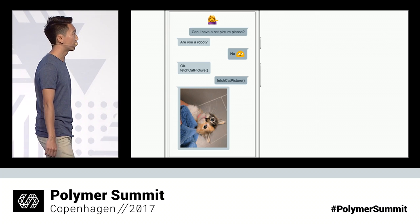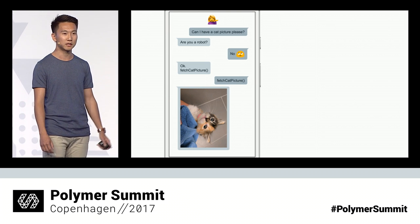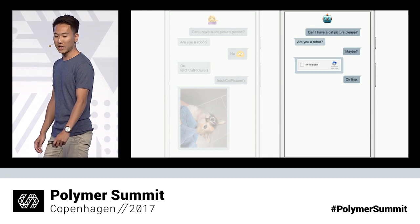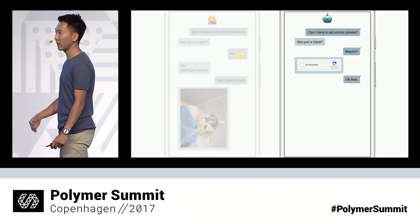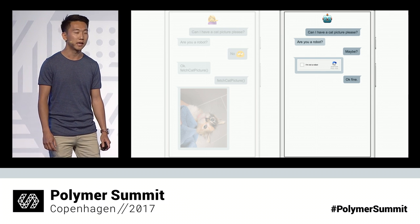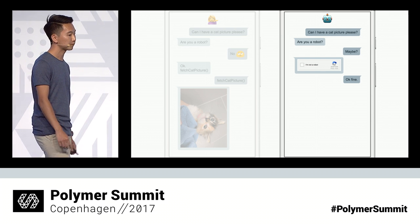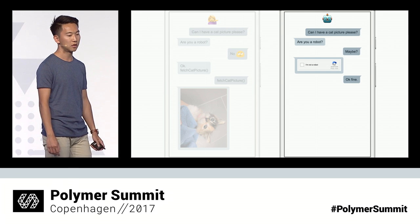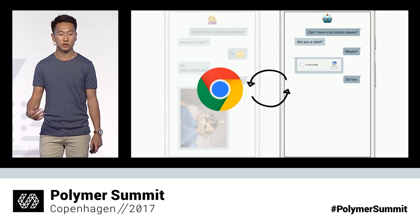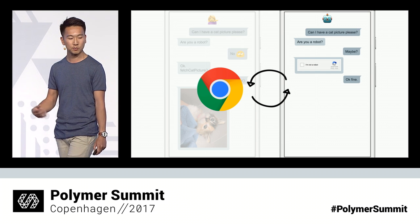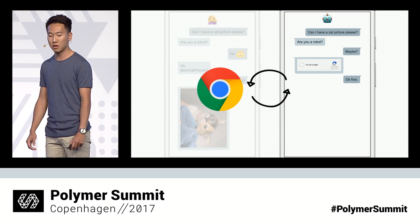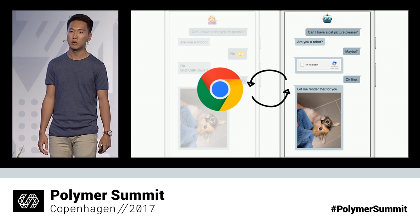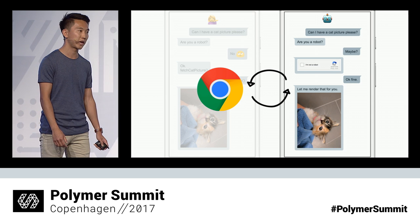By the way, this is one of my kittens, which I fostered recently. She's super adorable. Now when we encounter a bot, we again look at the user agent string and determine that they don't render. And instead of serving that fetch cat picture function, we fire off a request to headless Chrome to render this page on our behalf. And then we send the serialized rendered response back to the bot so they can see the full contents of the page.